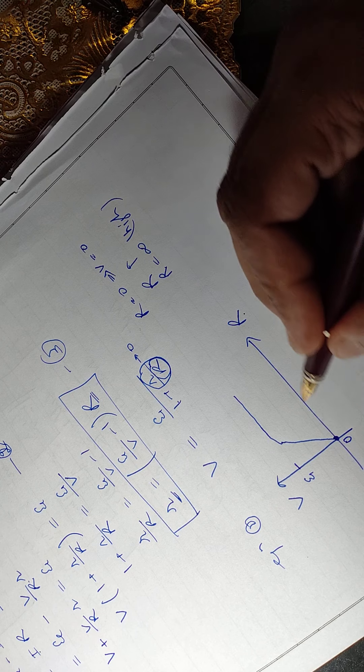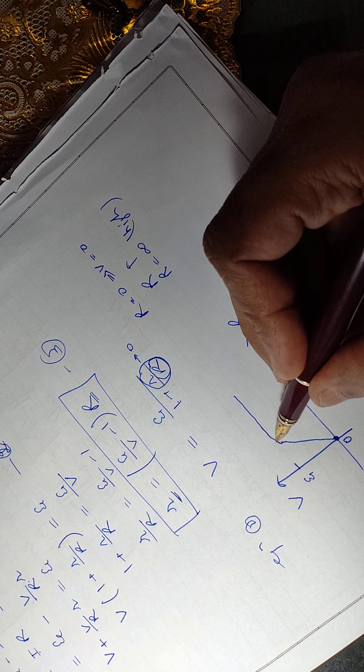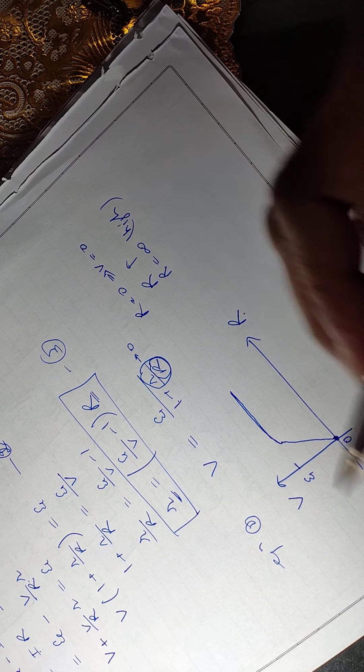Initially when the external resistance increases, voltage increases, and after some time it becomes constant. Thank you.